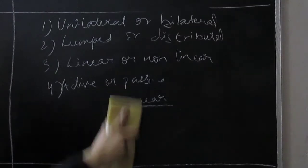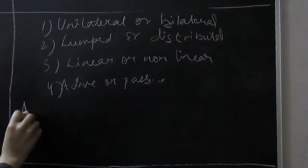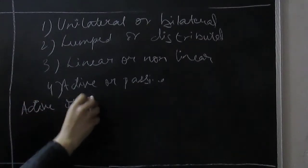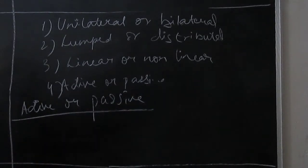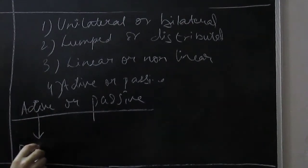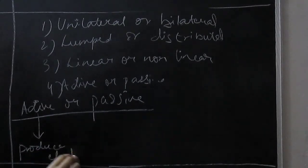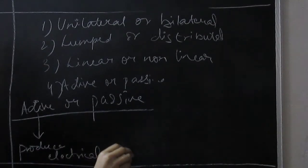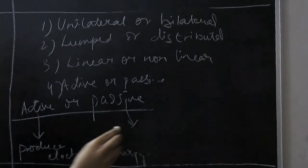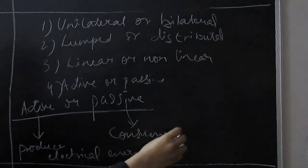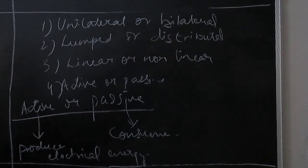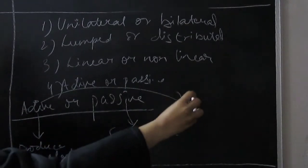We have passive circuit elements and active circuit elements. Active circuit elements produce electrical energy. They produce electrical energy. And passive elements consume electrical energy. They consume electrical energy. And sometimes we represent the power gain.